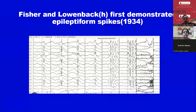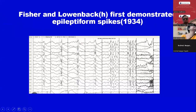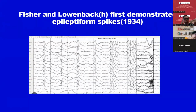Fischer and Lauenbach first demonstrated epileptiform spikes. We may find it very easy today, but look at the number of years spent on this — almost more than a century was spent before spikes were characterized.